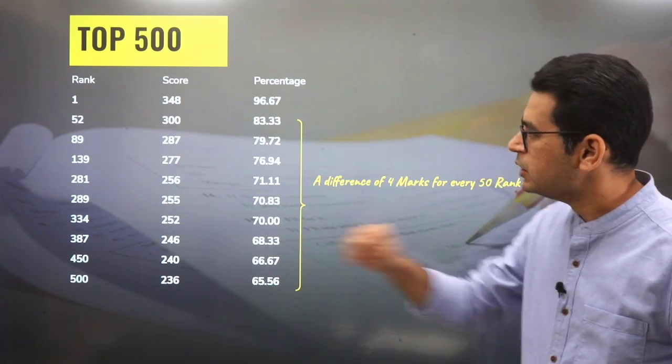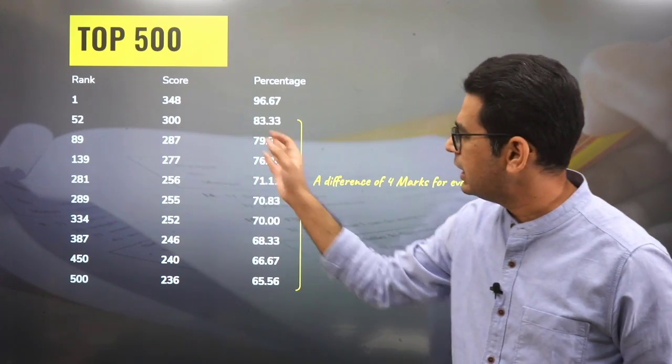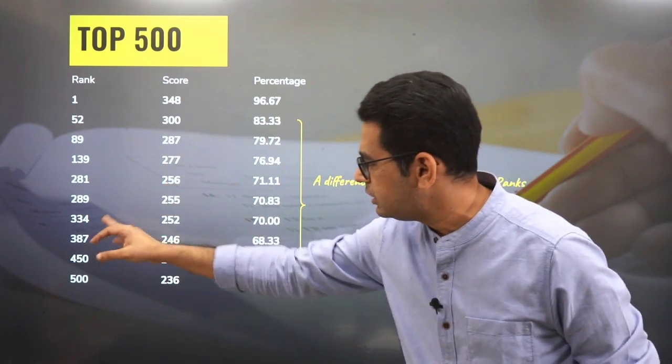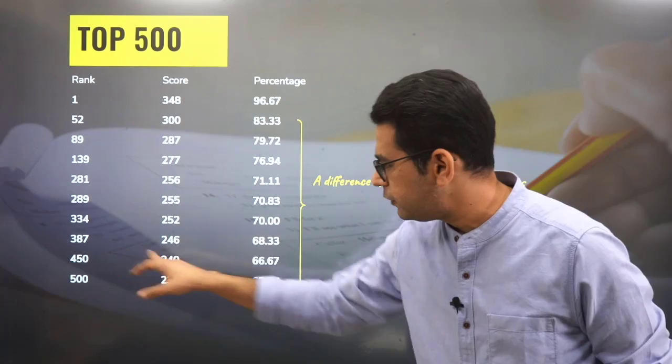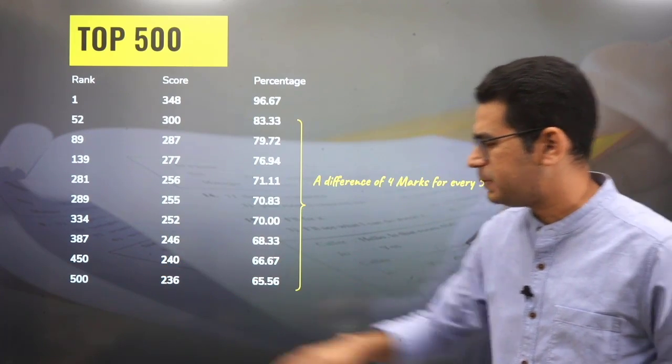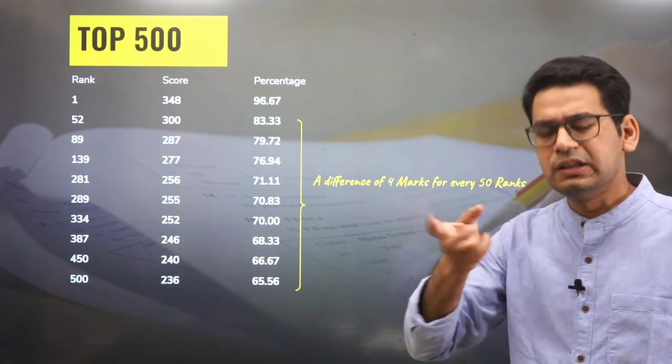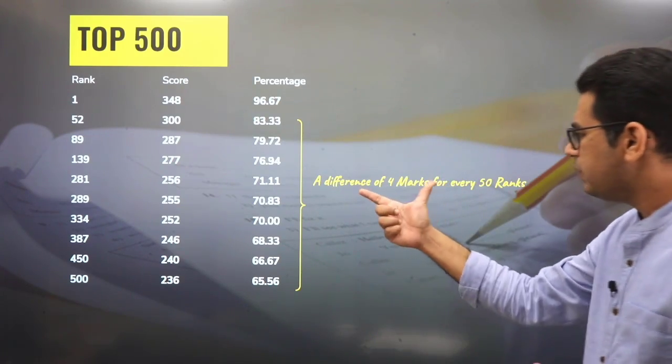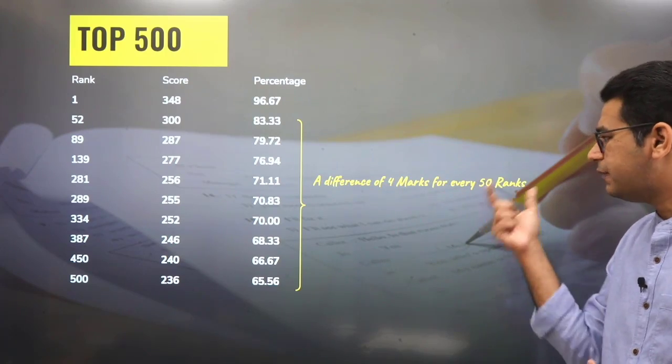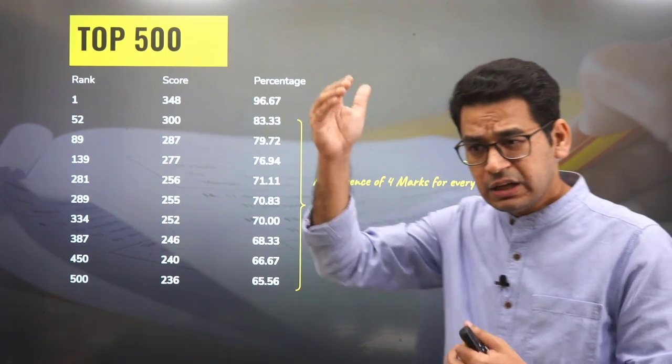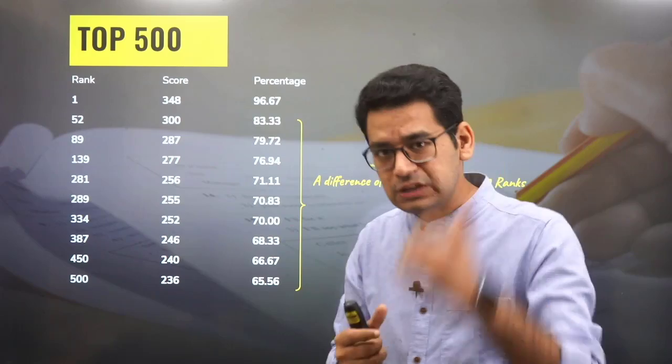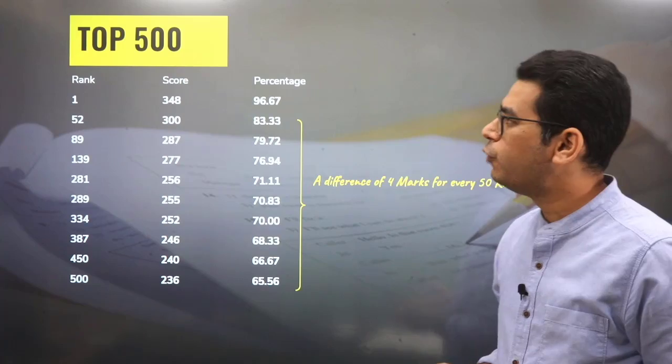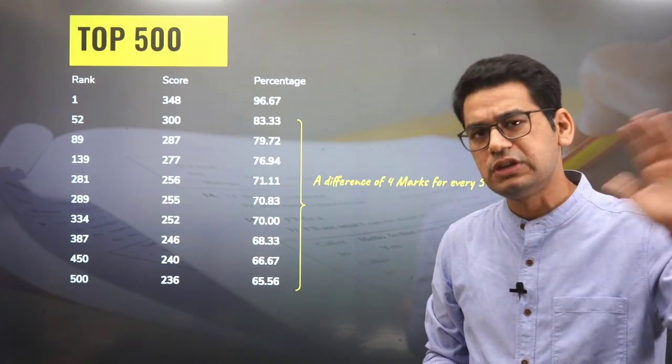The scenario is changing. In top 100, top 500, there's always some variation, but it does not change the scenario in a big way for the other ranks. So rank 52 was at 300, 89 at 287, 281 at 256, 334 at 252, 450 at 240, and expected 500 was at 236. What we can learn is a difference of 4 marks for every 50 ranks. So for every 50 ranks, you will see a drop of 4 marks in the top 500.